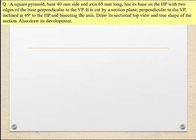In the front view the section plane appears at 45 degrees. The section plane bisects the axis at its midpoint. We need to draw the top view, the true shape of the section, and the development. This is the square pyramid and its sectional development.